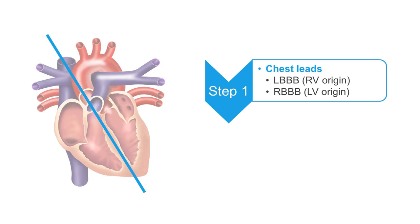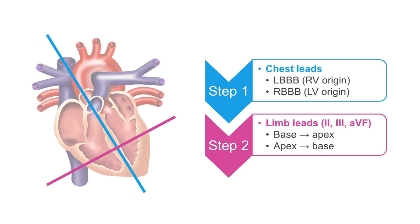To summarise: we begin by looking at the chest leads and the morphology of the ventricular ectopic beats. If they have a left bundle branch block morphology, then the ectopics are coming from the right ventricle. If they have a right bundle branch block morphology, then they're coming from the left ventricle. Then we look at the limb leads — in particular the inferior leads 2, 3, and AVF — and whether the ventricular ectopics have a positive or negative morphology. If the ventricular ectopics are coming from the base and travelling towards the apex, that gives rise to positive ectopics in the inferior leads. If they're arising at the apex and travelling towards the base, we will see a negative complex in the inferior leads. Using this principle, we can narrow down the origin of ventricular ectopics to one of four quadrants: the left or right ventricle, and the apex or base of the relevant ventricle.